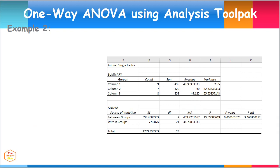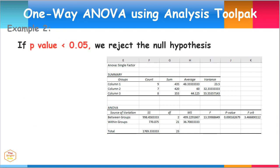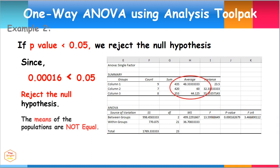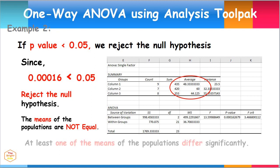Another method is determining whether the P value is less than 0.05, which is the alpha value. If this is the case, then one must reject the null hypothesis. This is the case, since 0.00016 is less than 0.05. Therefore, we reject the null hypothesis. We can conclude that the means of the populations are not equal, and at least one of the means differs significantly.